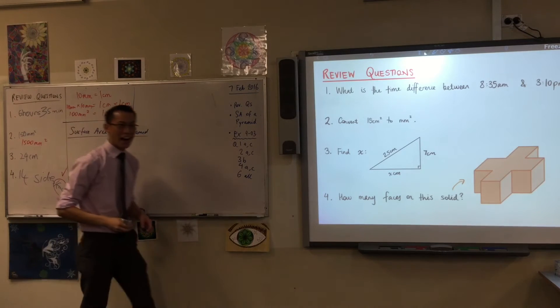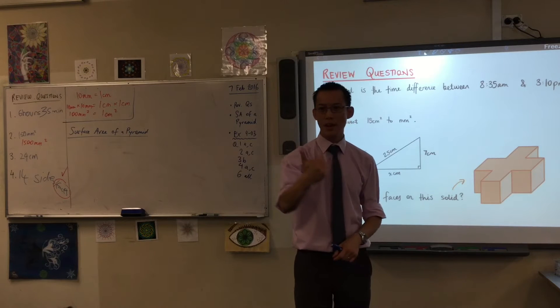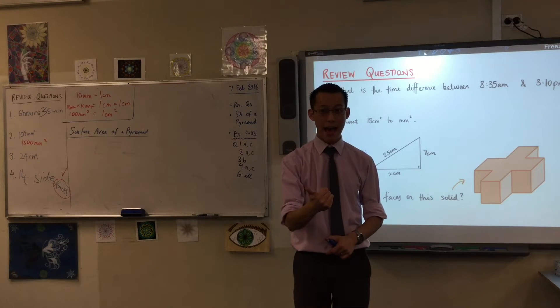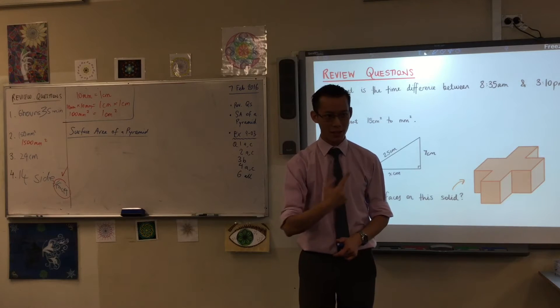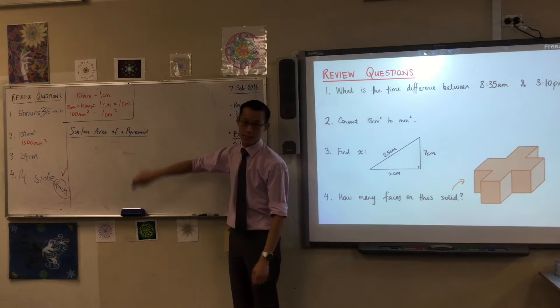So I pre-empted my own question. We have so far this year looked at the surface area of prisms. After prisms we looked at round things. What are they called again? Cylinders. Very good. And we're moving forward into pyramids today.